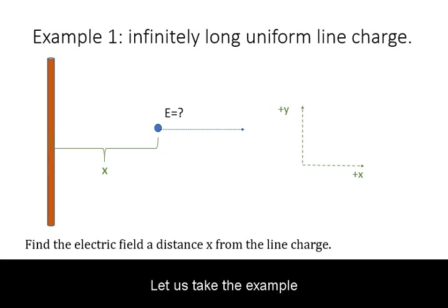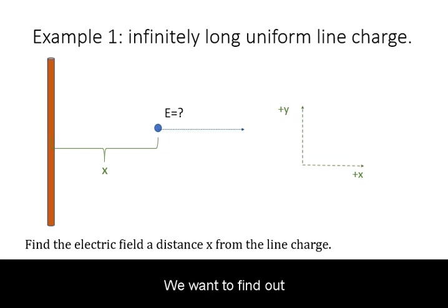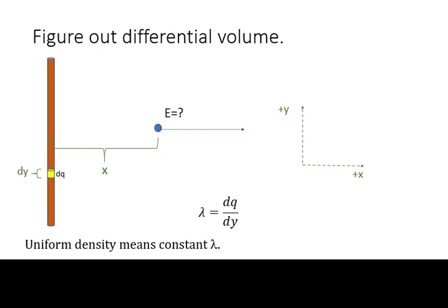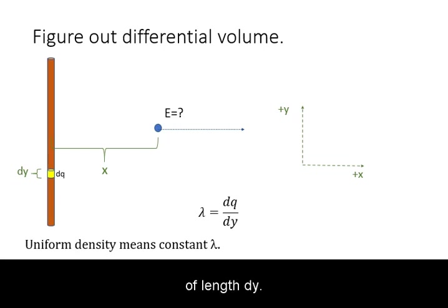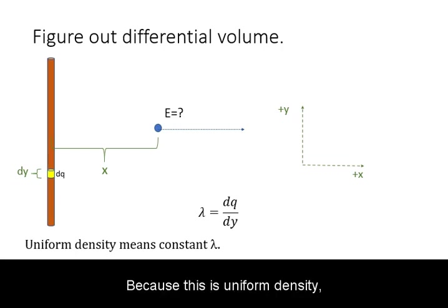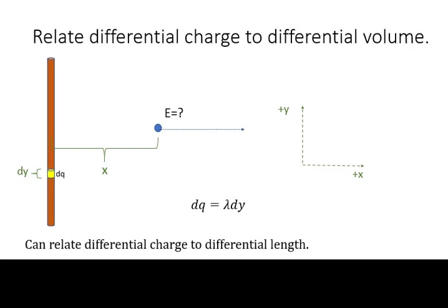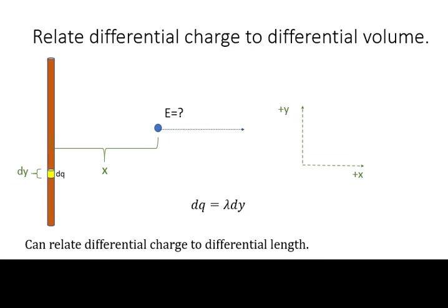Let us take the example of an infinitely long uniform line charge. We want to find the electric field at a distance x. We can break this charge into differential volume elements of length dy. Because it is uniform density, we can use that to relate the differential charge to the differential length.